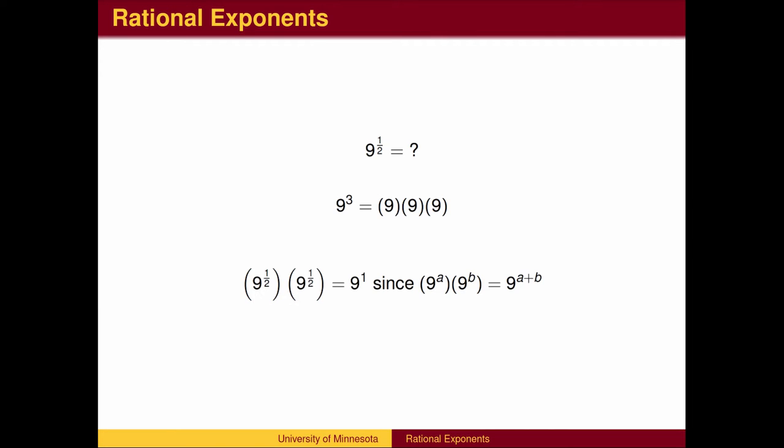One approach is to collect enough factors and use the addition rule for exponents. Since two copies of 9 to the 1 half power multiply to make 9, then 9 to the 1 half power is 3. In other words, 9 to the 1 half power is the square root of 9.